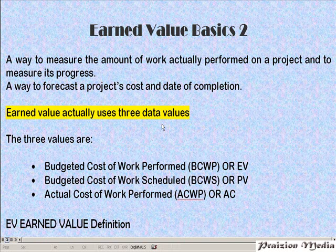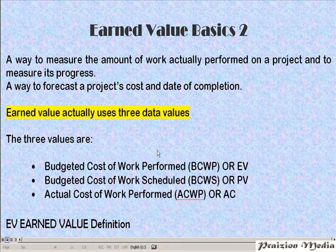Earned Value uses three data values. These data values are: the budgeted cost of work performed, which is Earned Value itself — EV; the budgeted cost of work scheduled — BCWS, or PV; and the actual cost of work performed — ACWP, or AC.